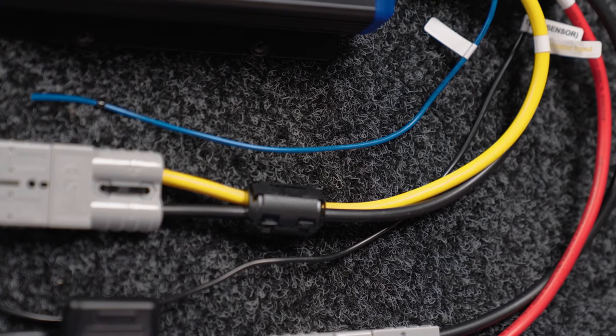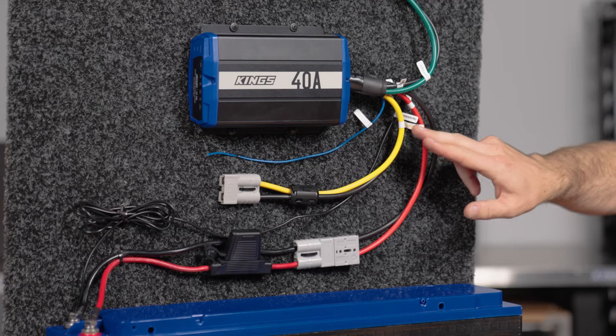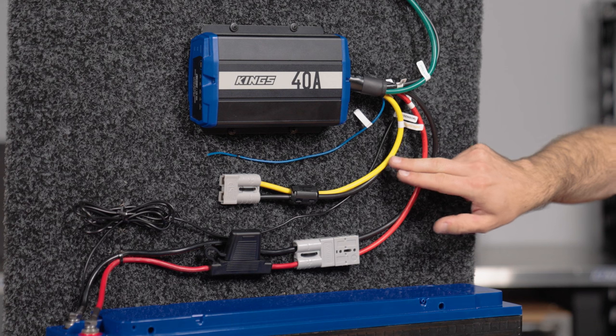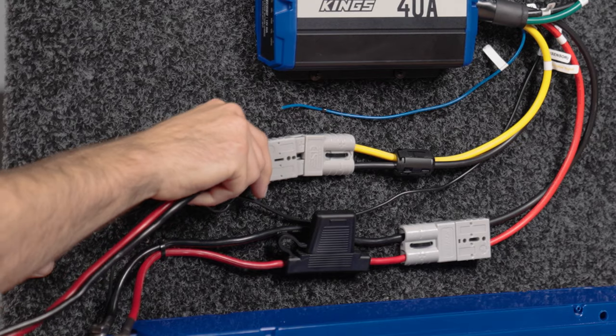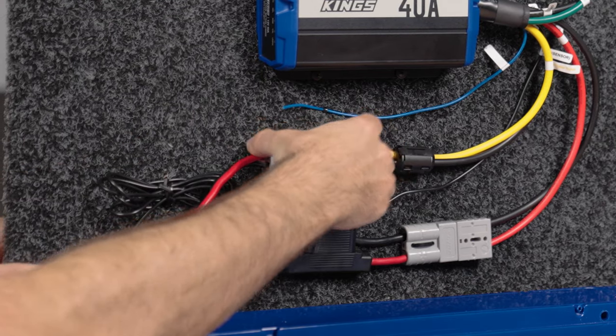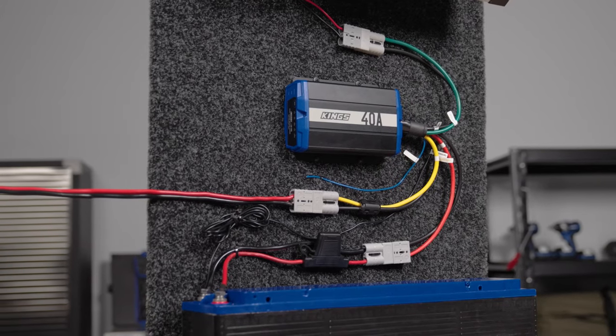Next up, we've got the yellow and black wires. This one's marked alternator input. This comes from your starter battery. Same idea, it's got a quick-connect plug, so you can easily and quickly plug in a 50-amp wiring kit.